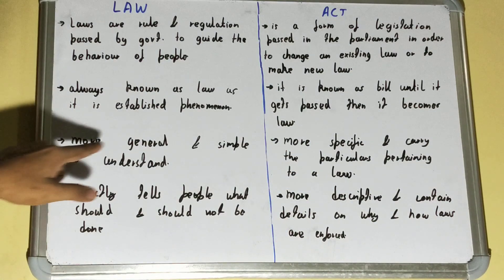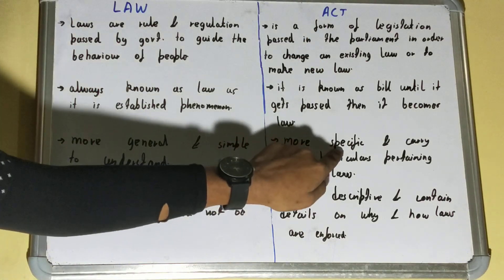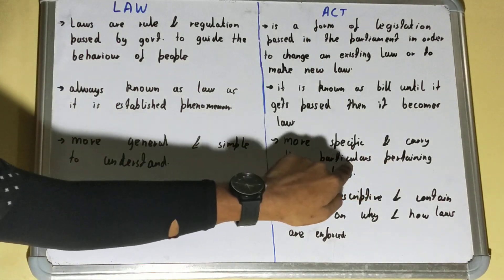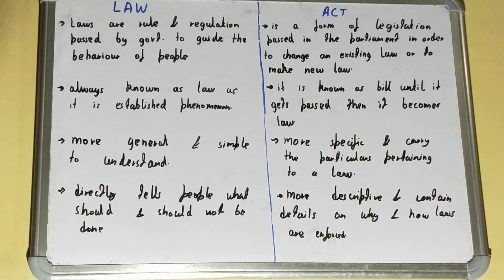Law is more general and simple to understand — it is applied on a number of people over a large area in a generalized way. But if we talk about the act, it is more specific and carries the particulars pertaining to a law. An act is specific to a certain law only and does not follow a general approach.